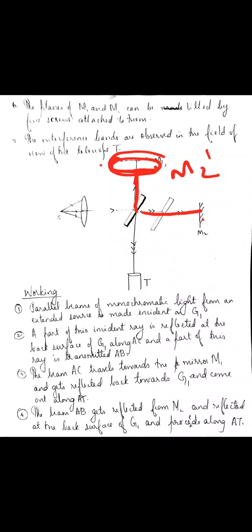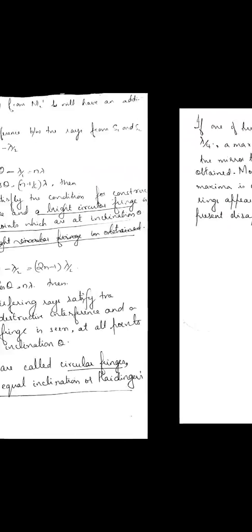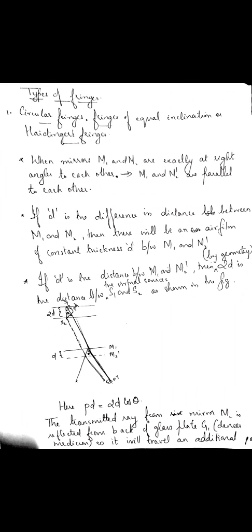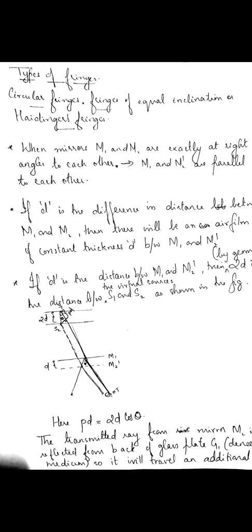I only have to measure the distance between these two virtual images to calculate the path difference. Based on that, we are going to find out the different types of fringes that we get in Michelson's interferometer. The first type of fringe that you get are called circular fringes, or fringes of equal inclination, or Haidinger's fringes.